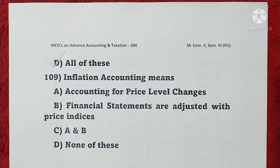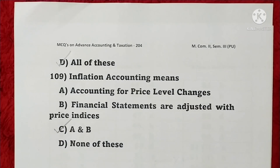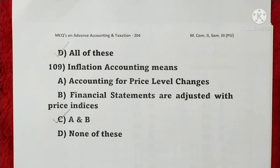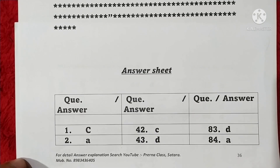Question 109: Inflation accounting means accounting for price level changes — financial statements are adjusted with price indices — A and B, so option C is correct. These are the multiple choice questions and answers, which are given on the last page.